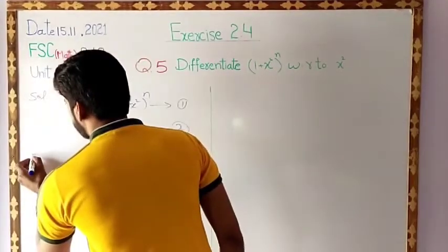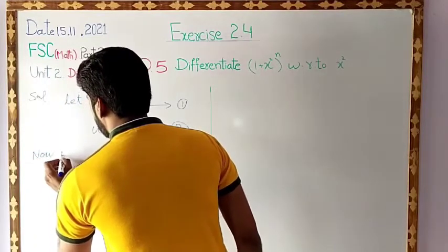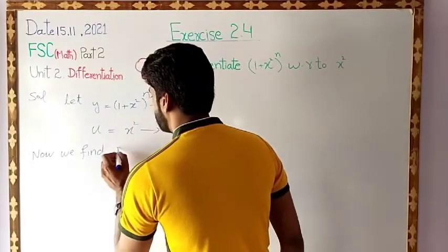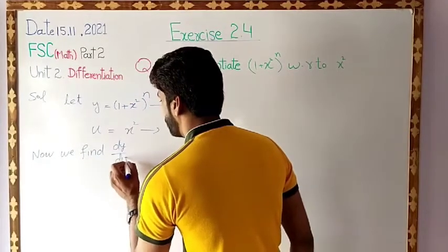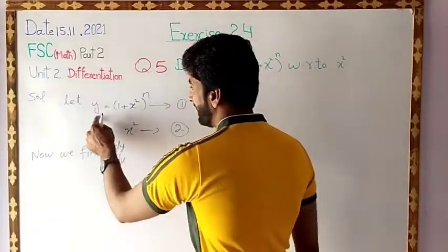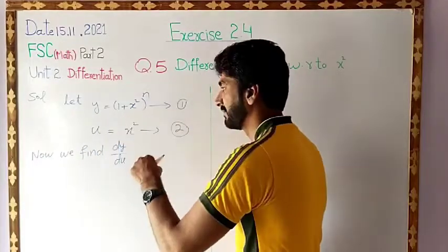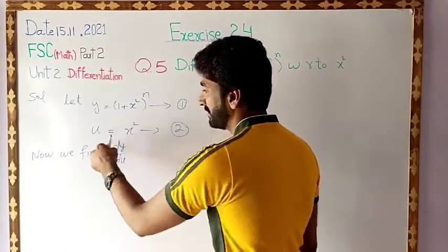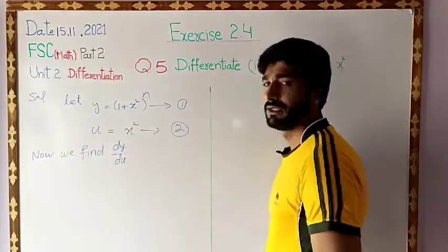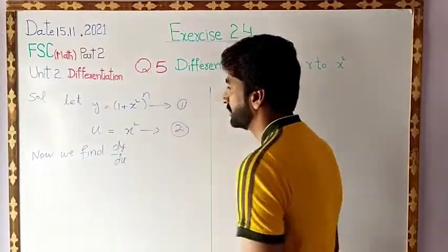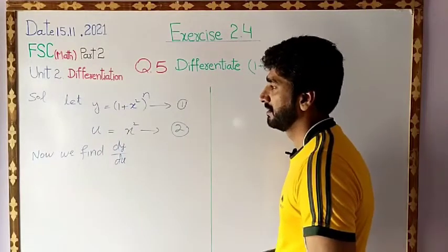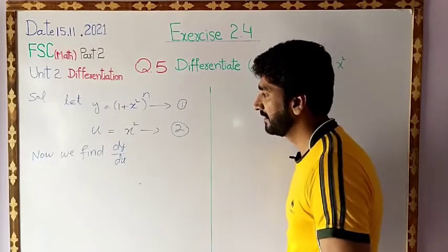Now we find dy over du. In equation 1, y is the dependent variable and x is the independent variable. In equation 2, u is the dependent variable and x is the independent variable. Here we use 3 variables: y, x, and u. This function is a composition function, and when we find the derivative of a composition function, we deal with the chain rule.